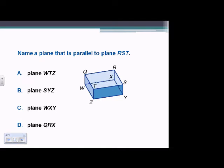Name a plane parallel to plane RST. We have this top-down view of the box, and RST is highlighted. A plane parallel to it would be the bottom of the box. Looking at our choices, it would have to be CWXY — that is the plane parallel to plane RST.